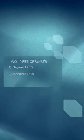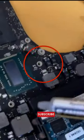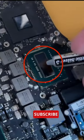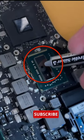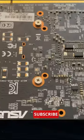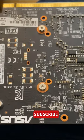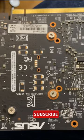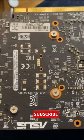There are two types of GPUs: integrated and dedicated. Integrated GPUs are chips typically soldered onto a motherboard, whereas a dedicated GPU is a separate device plugged into one of the motherboard's PCI lanes.